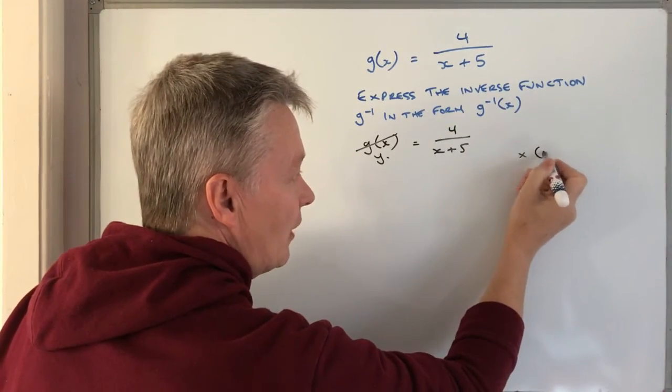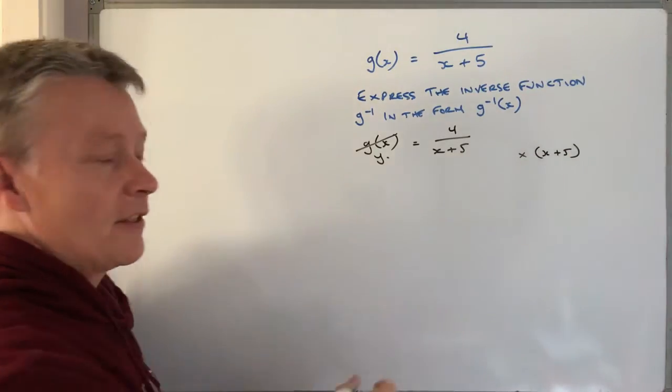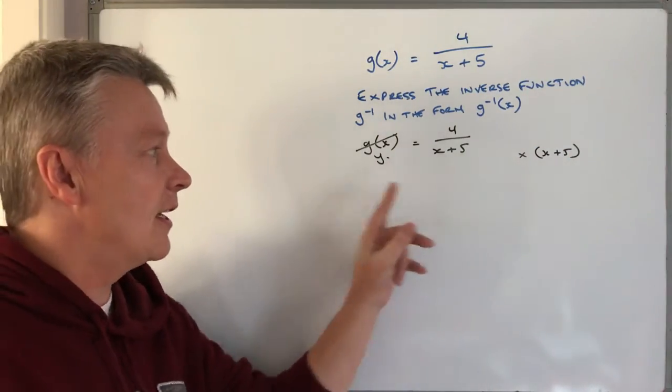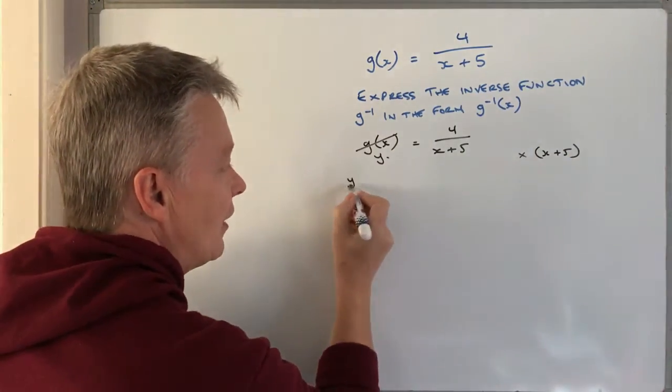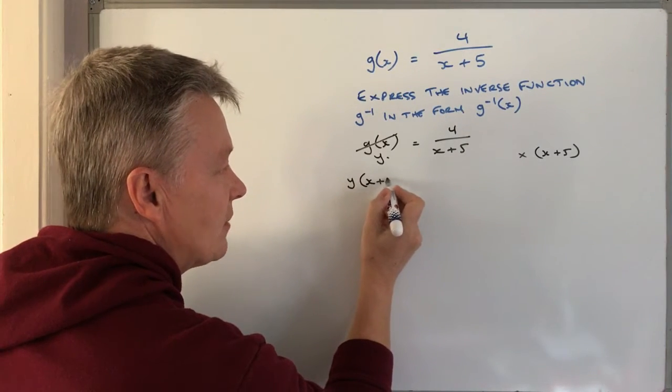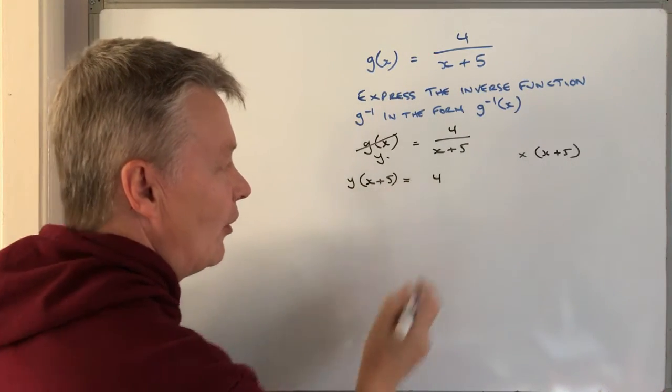If I multiply by x+5 on the right hand side, I'm going to lose the denominator. If I multiply on the left side, I get y(x+5) = 4.